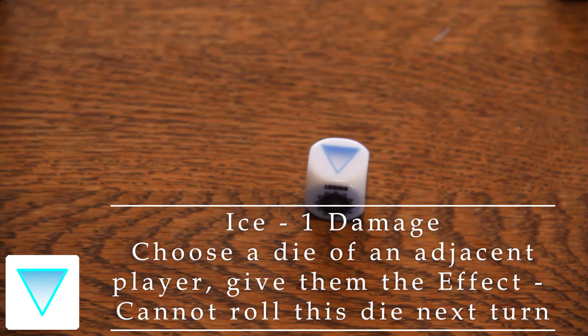Ice deals 1 damage. Choose 1 die from a player to either your right or left. That hero is under the frozen effect and cannot be rolled on their next turn. All damage always goes left, even if you freeze a die to your right.